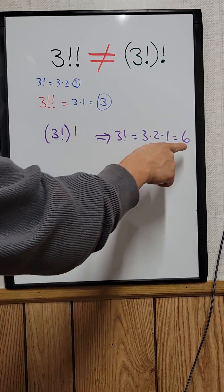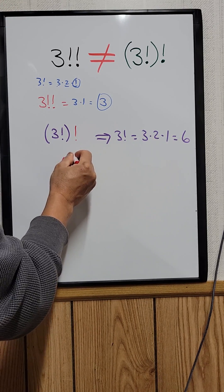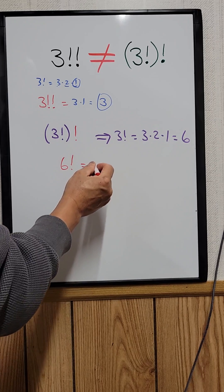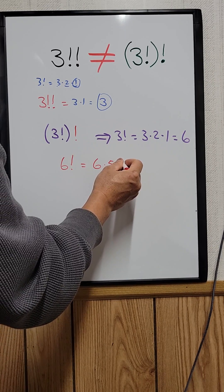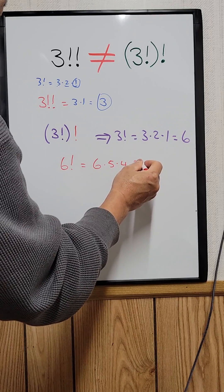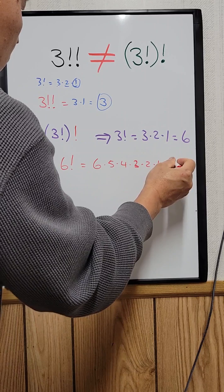And now that 6, we plug into this, so that becomes 6 factorial. And you know 6 factorial equals 6 times 5 times 4 times 3 times 2 times 1, which equals 720.